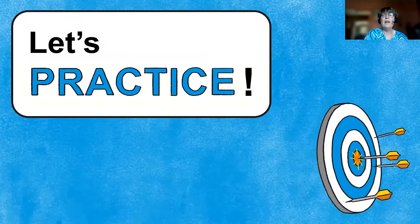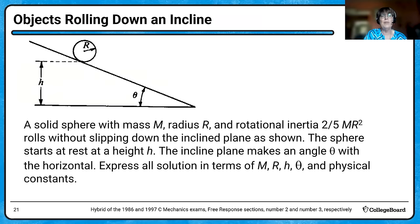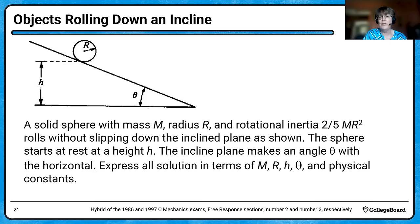Now let's practice with some free response problems. Here we have an object rolling down an incline — a solid sphere with rotational inertia two-fifths MR squared. There are no numbers in this problem. You have to express all your solutions in terms of the mass, the radius, the height, the incline angle, and physical constants. When they say physical constants, they're talking about little g, the acceleration due to gravity.